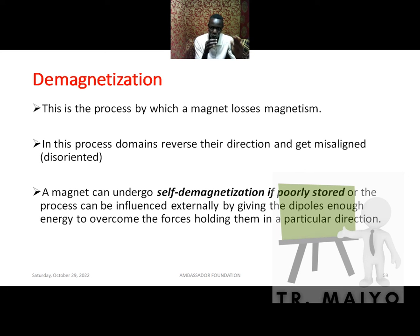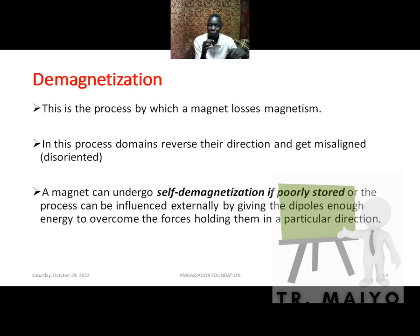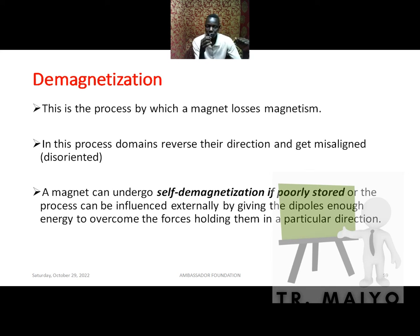Demagnetization methods include: electrical method using alternating current — AC disorients the magnetic dipoles; hammering in an east-west direction — this also disorients the dipoles as they gain kinetic energy and align randomly; and heating — raising the temperature disorients the dipoles. A magnet can also undergo self-demagnetization if not stored properly.